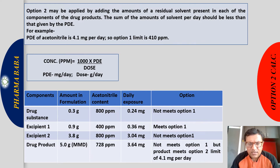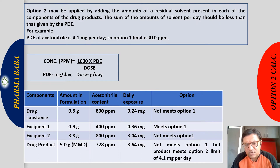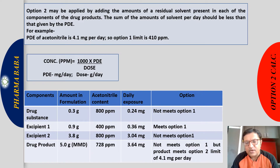The sum of exposures is 3.64 mg. Since the PDE for acetonitrile is 4.1 mg per day, and the drug product gives an exposure of only 3.64 mg, it is well within the limit. Therefore, the drug product complies as per the Option 2 limit.